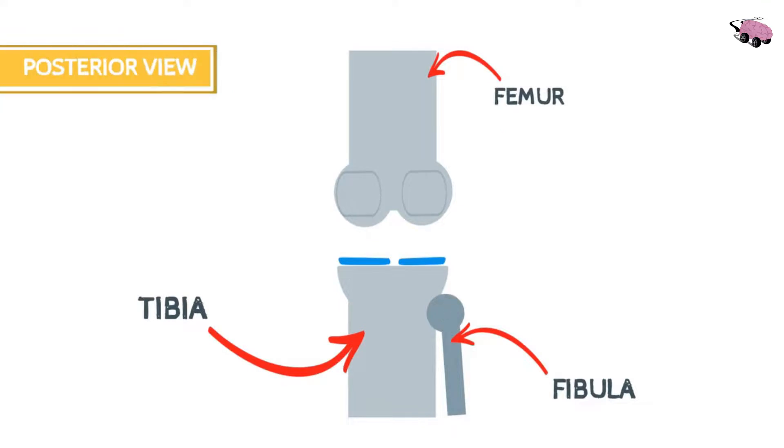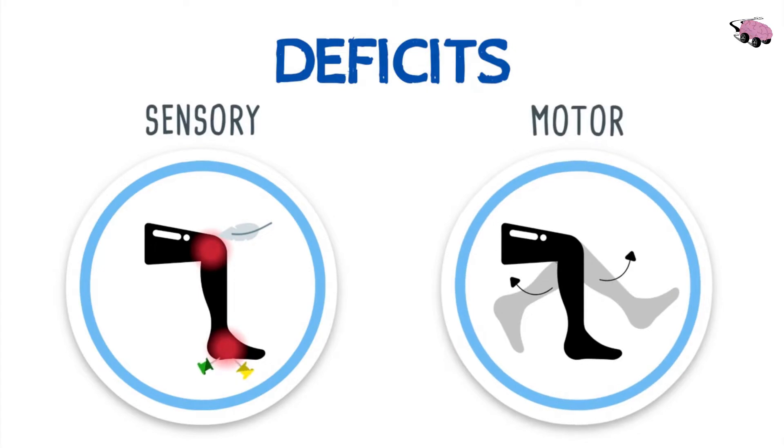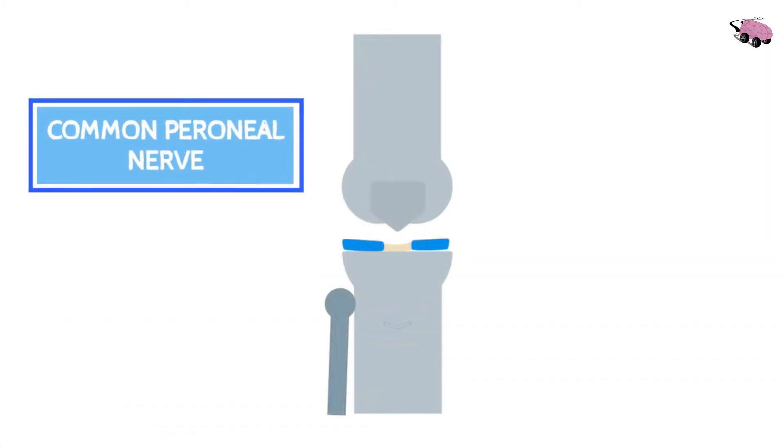Also a common problem of the popliteal fossa is an appearance of a swelling or a mass. One possible cause of this is an aneurysm of the popliteal artery. This can compress the tibial nerve, producing sensory and motor deficits of the lower leg. We'll see this in the case if the common peroneal nerve is damaged, which is a branch of the tibial nerve at the popliteal fossa.